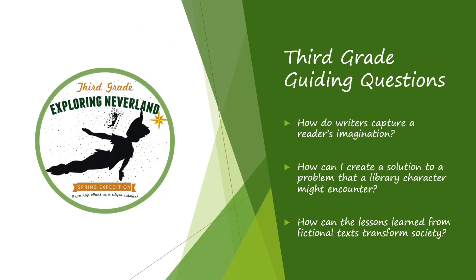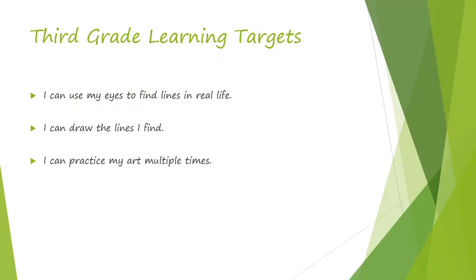Your third grade guiding questions have been: how do writers capture a reader's imagination? How can I create a solution to a problem that a library character might encounter? And how can the lessons learned from fictional texts transform society? Today your learning targets are: I can use my eyes to find lines in real life, I can draw the lines that I find, and I can practice my art multiple times.